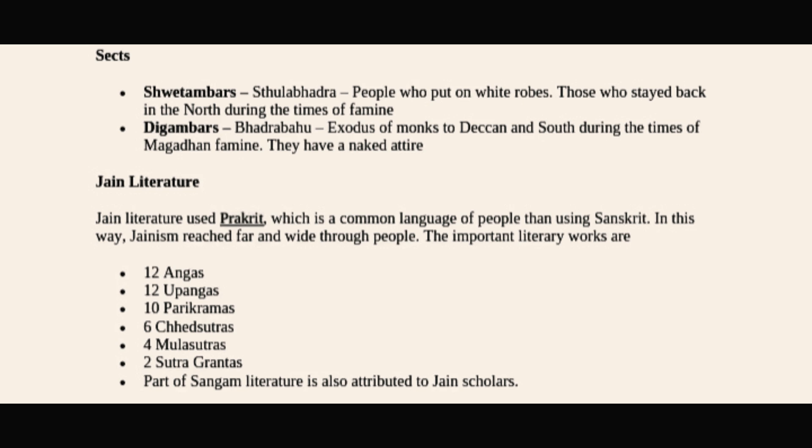There are two sects of Jainism: Shvetambaras and Digambaras, similar to Hinayana and Mahayana in Buddhism. Shvetambaras, associated with Sthulabhadra, wore white robes and stayed back in the north during famine. Digambaras, associated with Bhadrabahu, migrated to the Deccan and south during the Magadha famine and went without clothing.